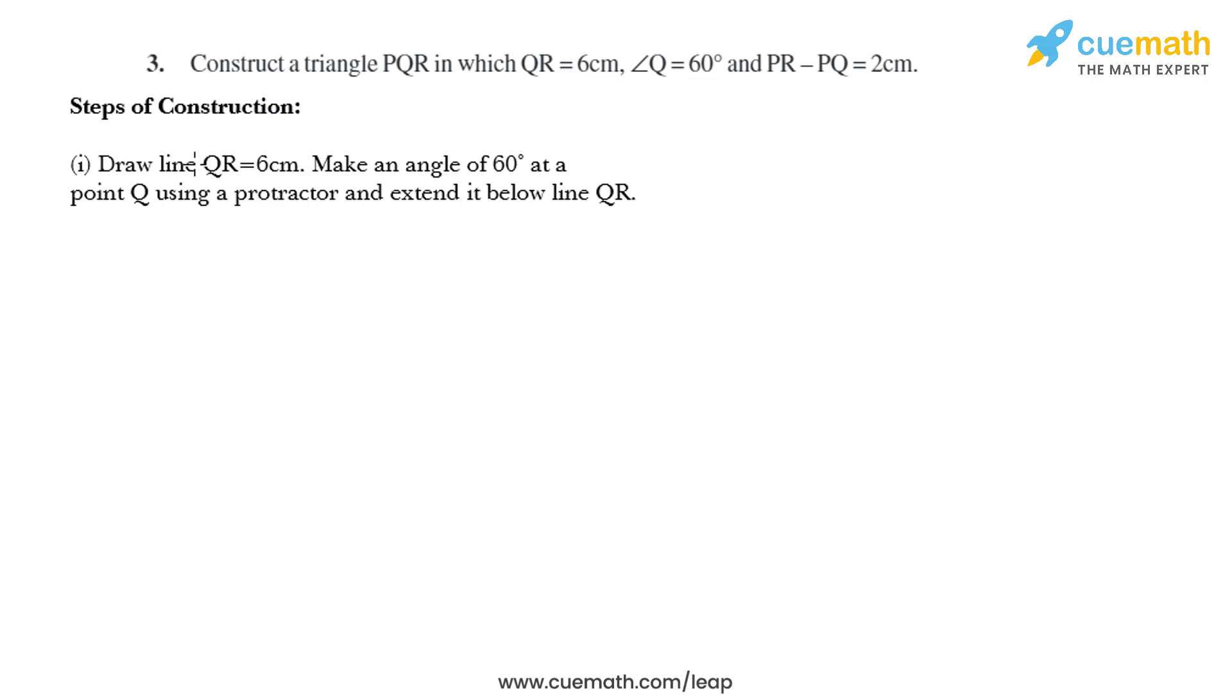Let's start with the steps of construction. Draw line QR equals 6 cm, make an angle of 60 degrees at point Q using a protractor, and extend it below line QR. So let's draw line QR like this. This is line QR and that is 6 cm.